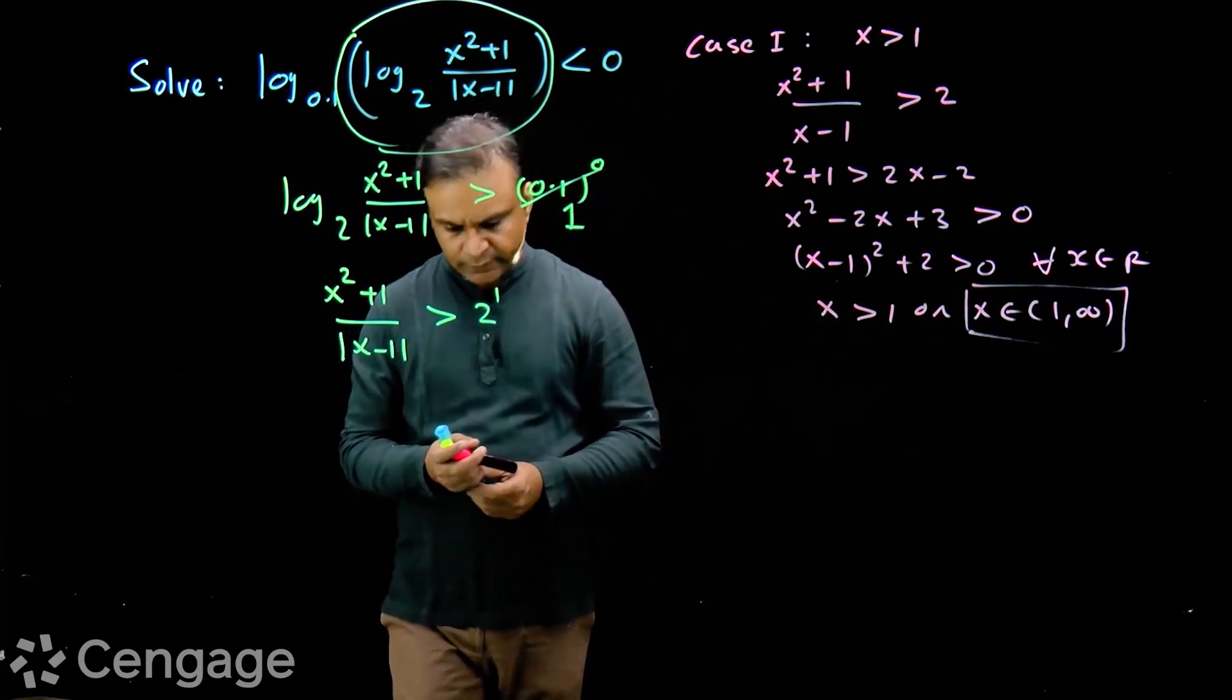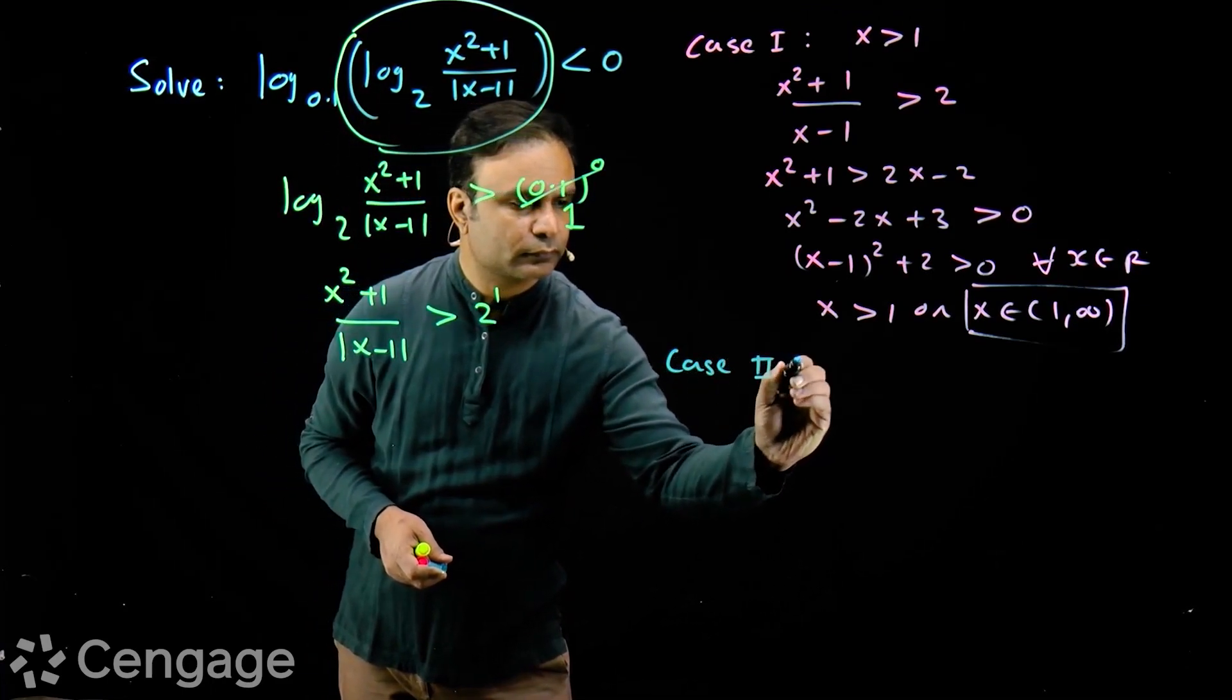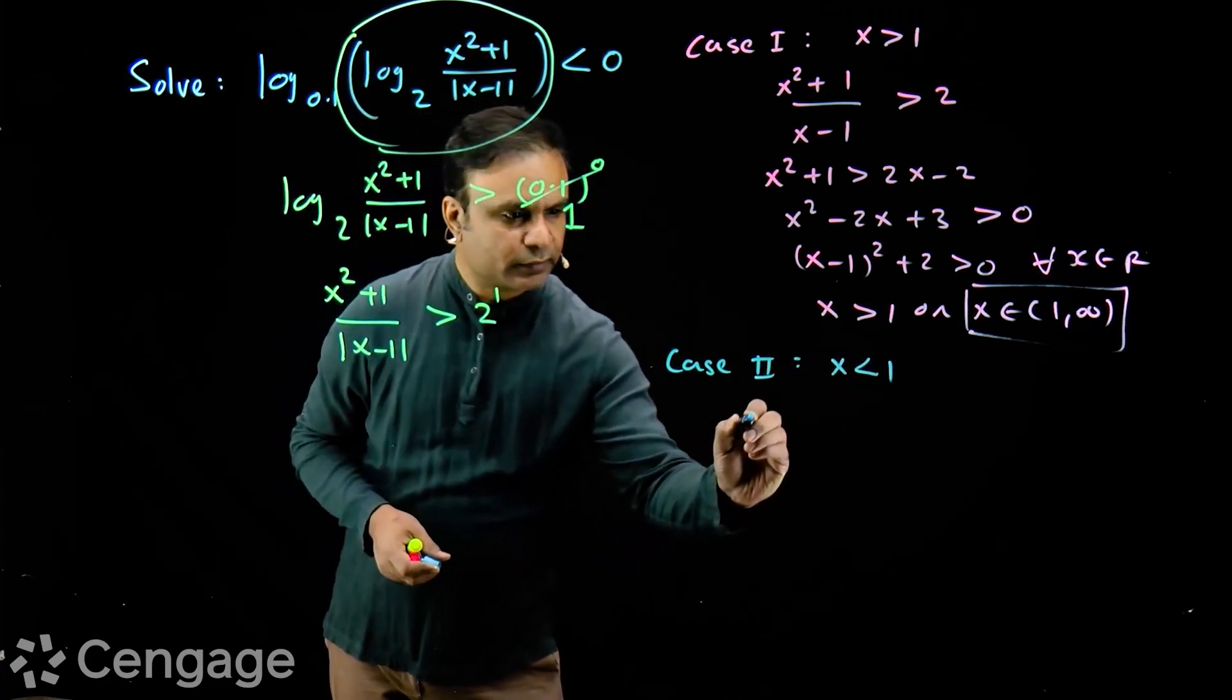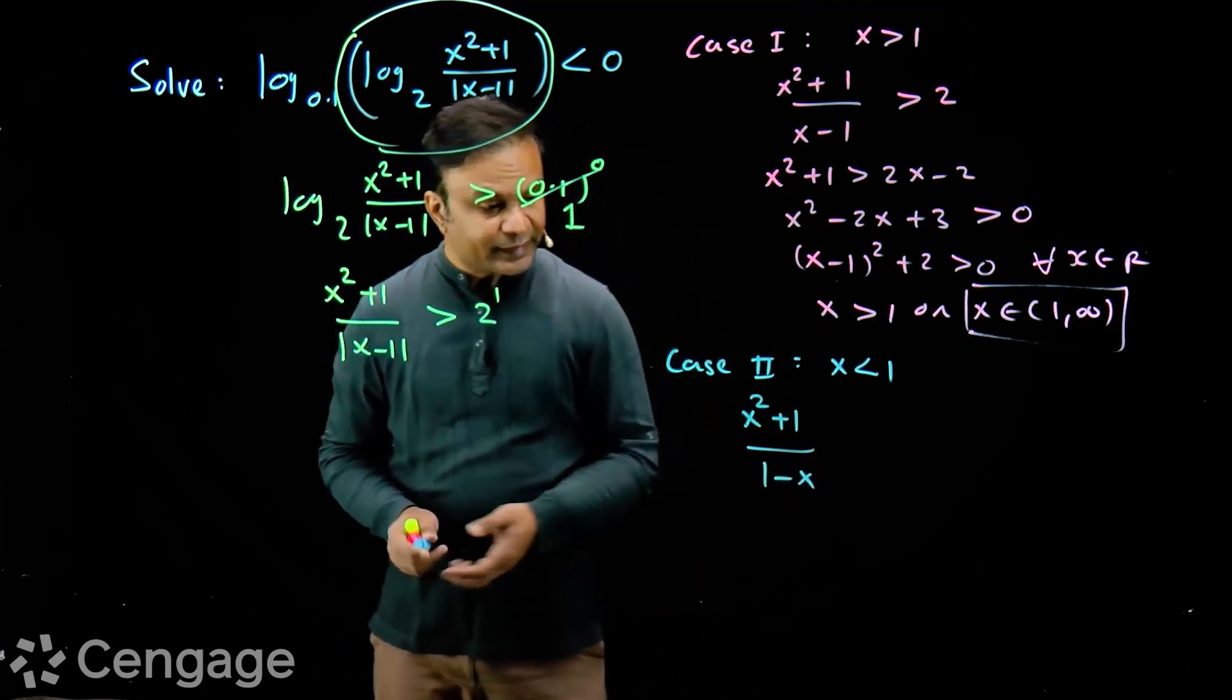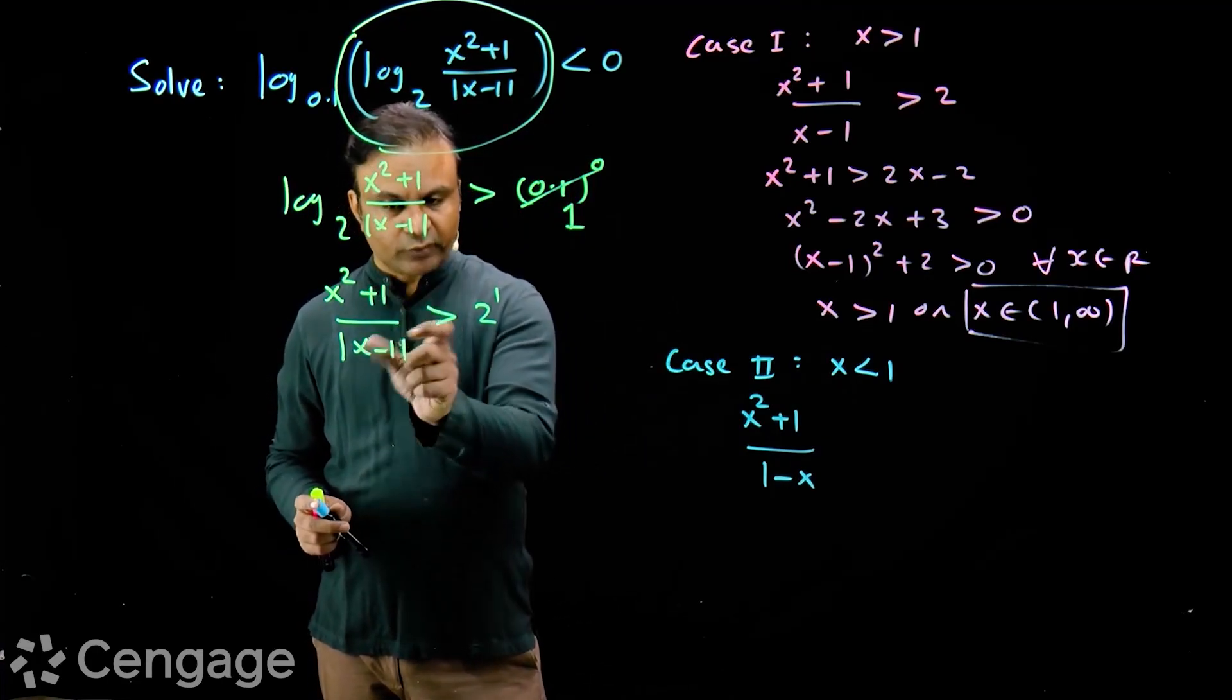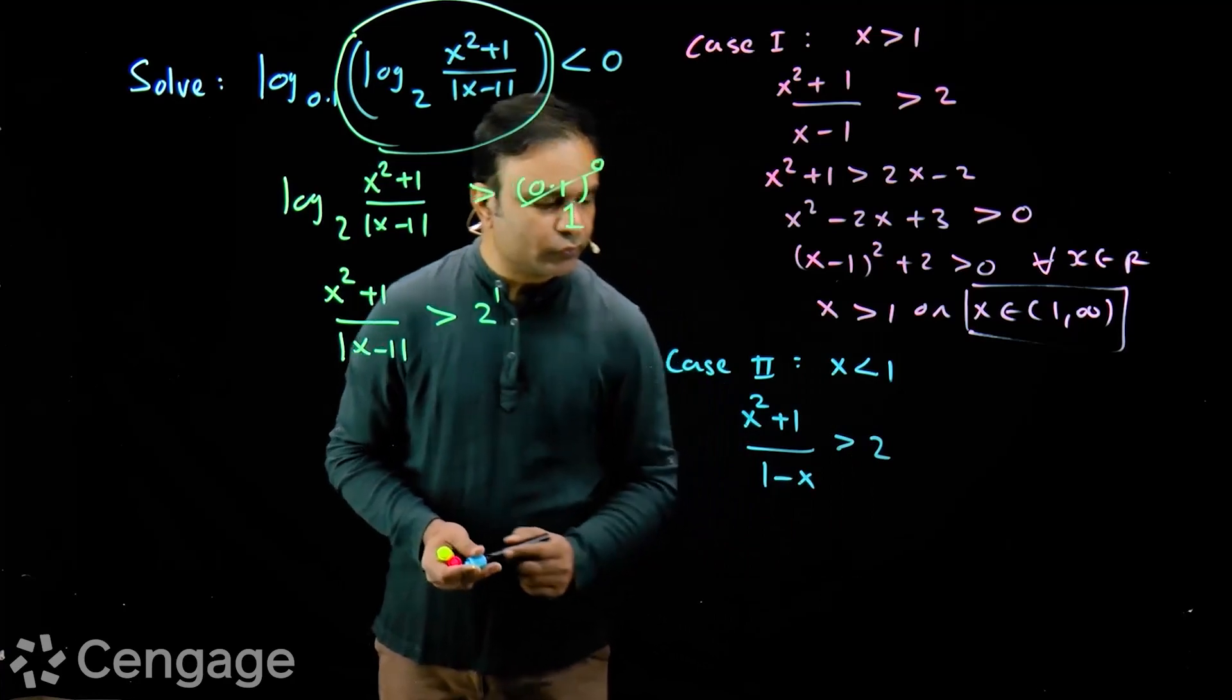Now we consider second case when x is less than 1. So we write x square plus 1 upon 1 minus x. When x less than 1, 1 minus x is positive. So when we remove here modulus sign, we write 1 minus x. This is greater than 2.